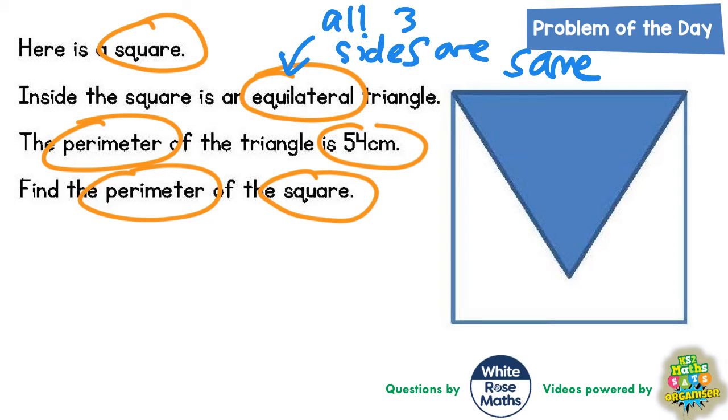Well, if the perimeter of the triangle is 54, and all three sides are the same, all we need to do is divide that 54 by 3, and that will tell us what one side is.